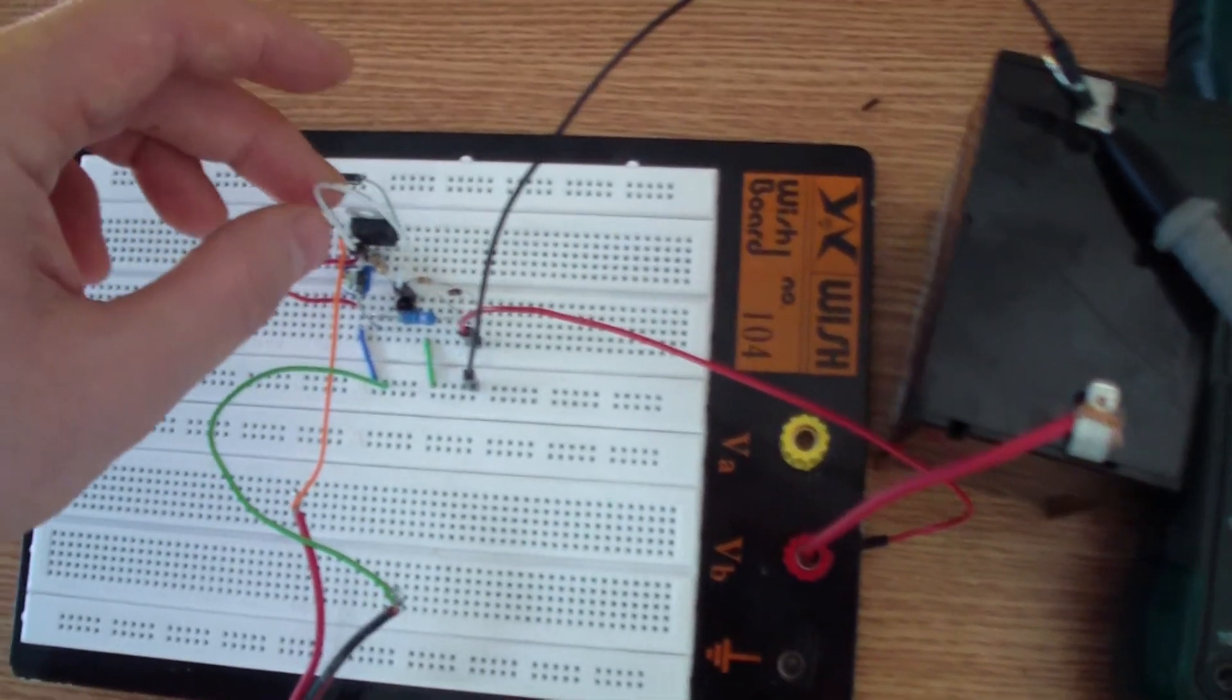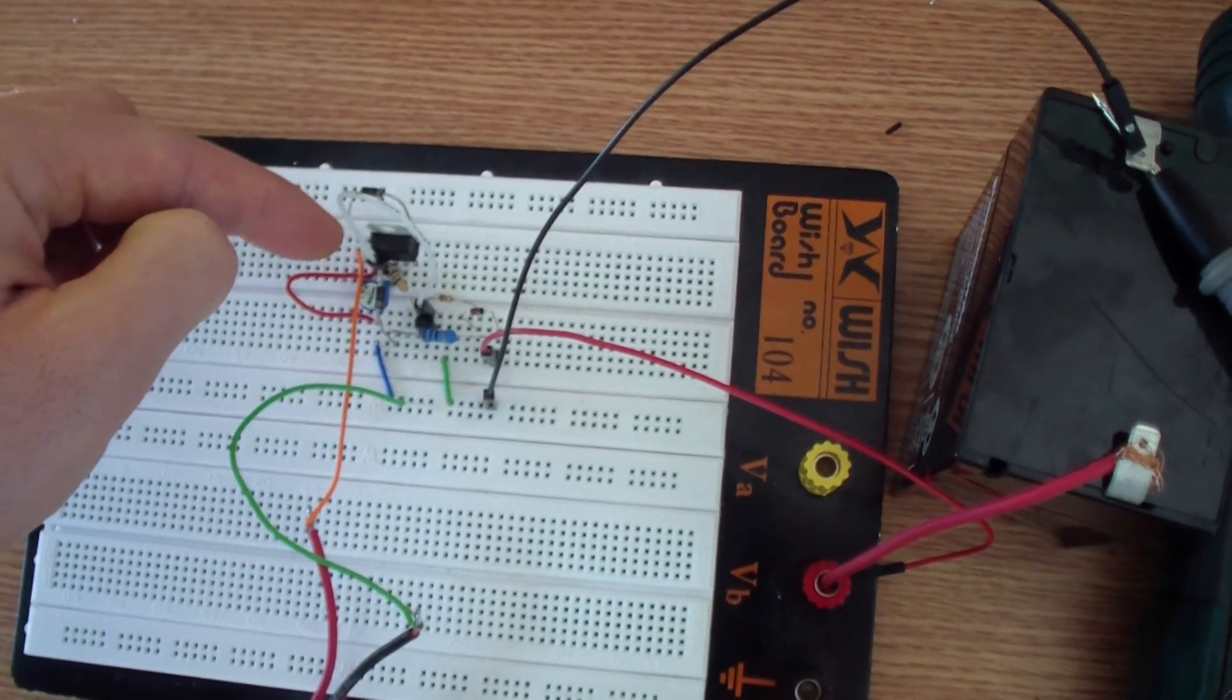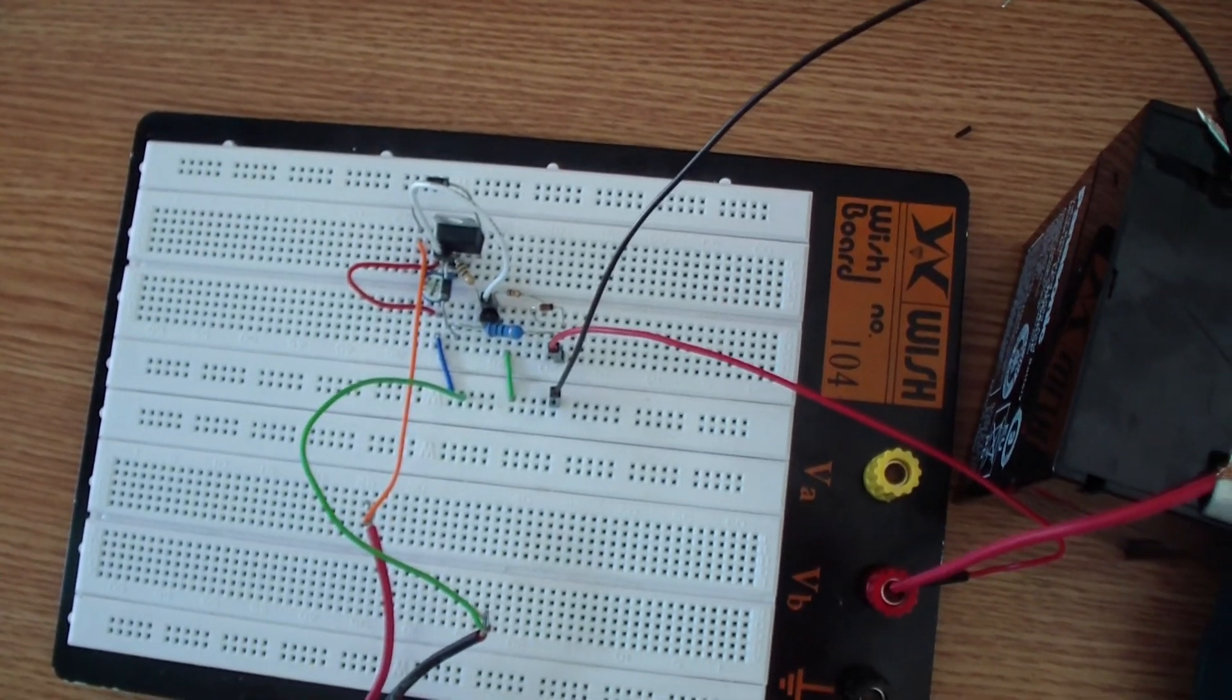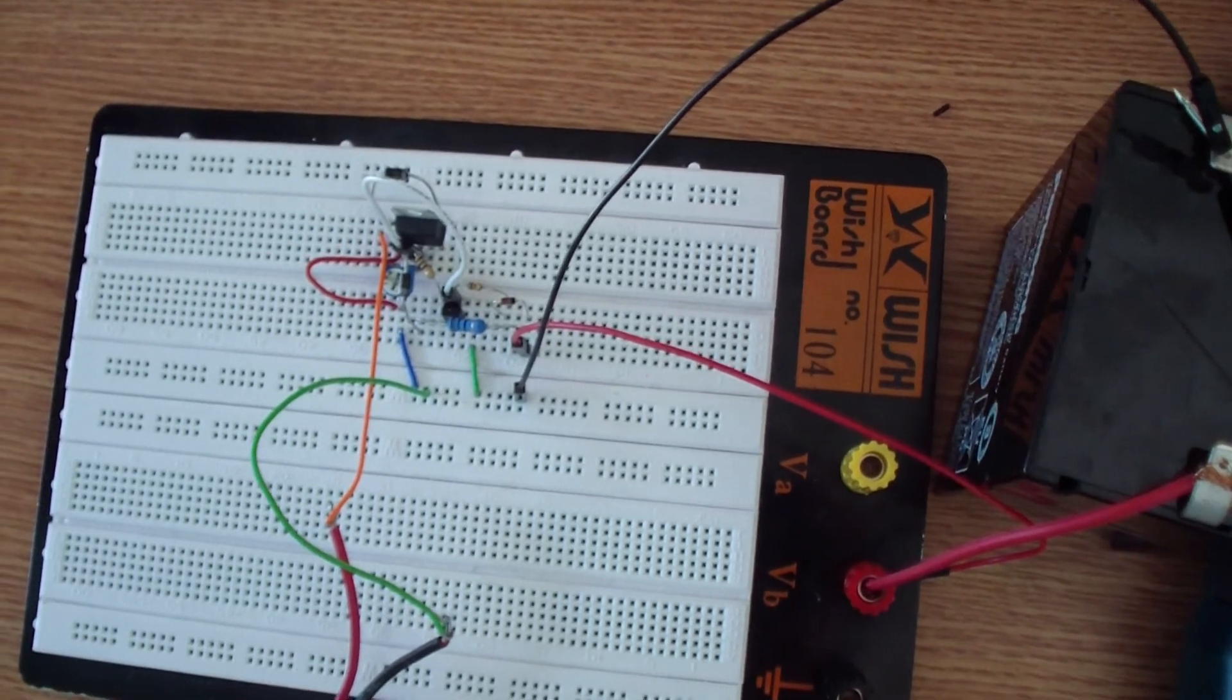Oh wow, the LM317 must be mounted on a heatsink. It's getting pretty hot, probably because the input voltage is too high for this circuit. It should be at 12 volts.